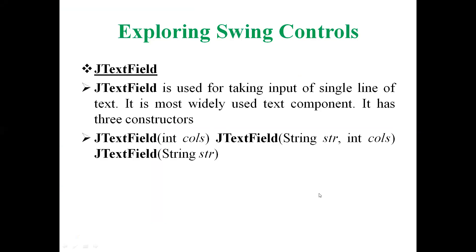Referencing the J text field, it is used for taking input of a single line of text, like role number or name of the student, and it is the most widely used text component. There are three constructors we can make use of: one is mentioning the columns, thereafter specification of the string along with the columns, and the most frequently used is the message-oriented J text field — the third category of the component.